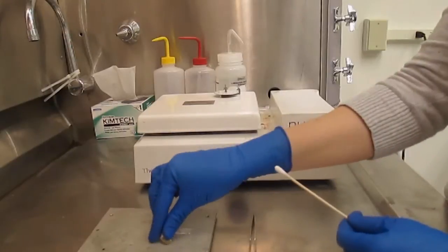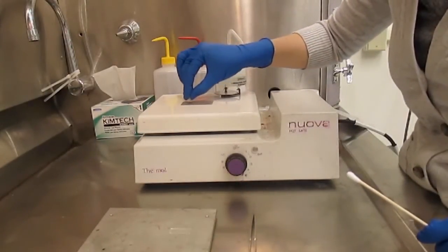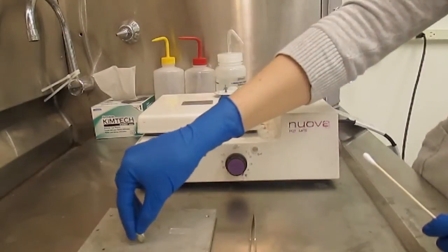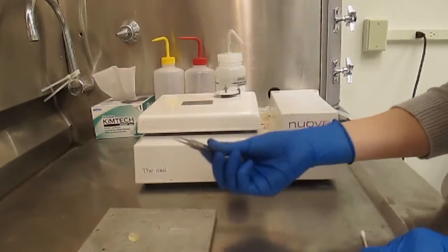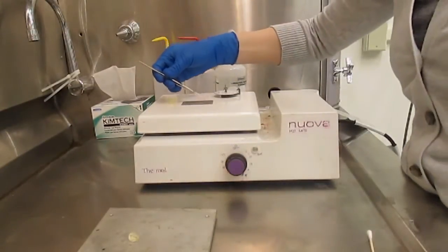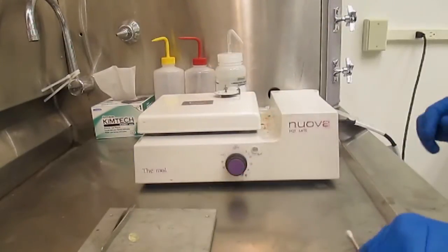Coat the middle of the specimen plate with enough crystal bond adhesive to accommodate the bulk glass. Use tweezers to place the bulk glass onto the melted crystal bond adhesive and gently press the glass down with a wooden stick until any air bubbles beneath the glass are expelled.